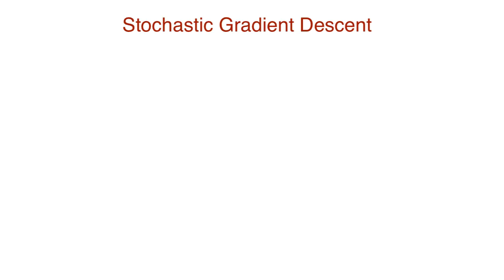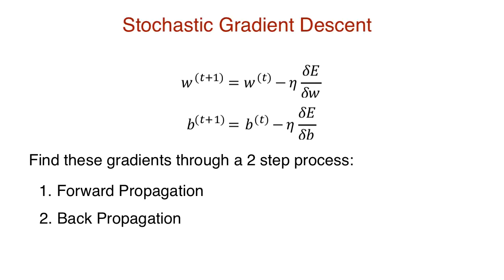We now need to find the value of theta that minimizes this cost, and this is where neural network training takes place. We'll use stochastic gradient descent for this training. This involves minimizing the cost every time we look at a random sample by using gradient of the cost with respect to the weights and biases. Hence, we need to find these gradients. Determining these gradients and updating weights involves a two-step process: forward propagation and backpropagation.